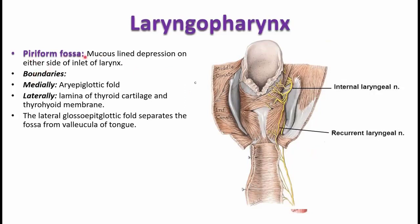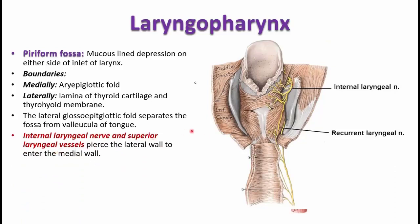The structures piercing this piriform fossa are mainly the internal laryngeal nerve. The internal laryngeal nerve pierces the thyrohyoid membrane, then the mucous membrane, and is seen in the piriform recess along with the superior laryngeal vessels. They pierce the lateral wall, then the medial wall, entering the cavity of the larynx to supply its mucous membrane, passing through the piriform fossa.